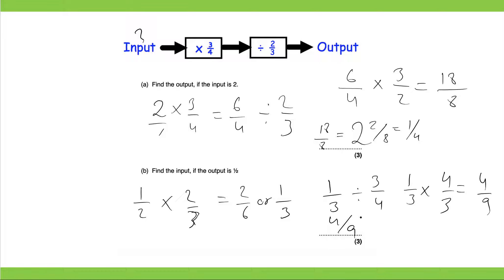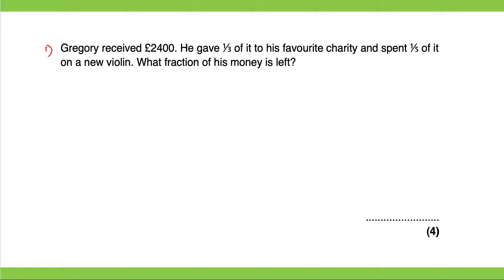Next question. Gregory received £2,400. He gave one third of it to his favourite charity and spent one fifth of it on a new violin. What fraction of money is left? So if he receives £2,400, that's his total.